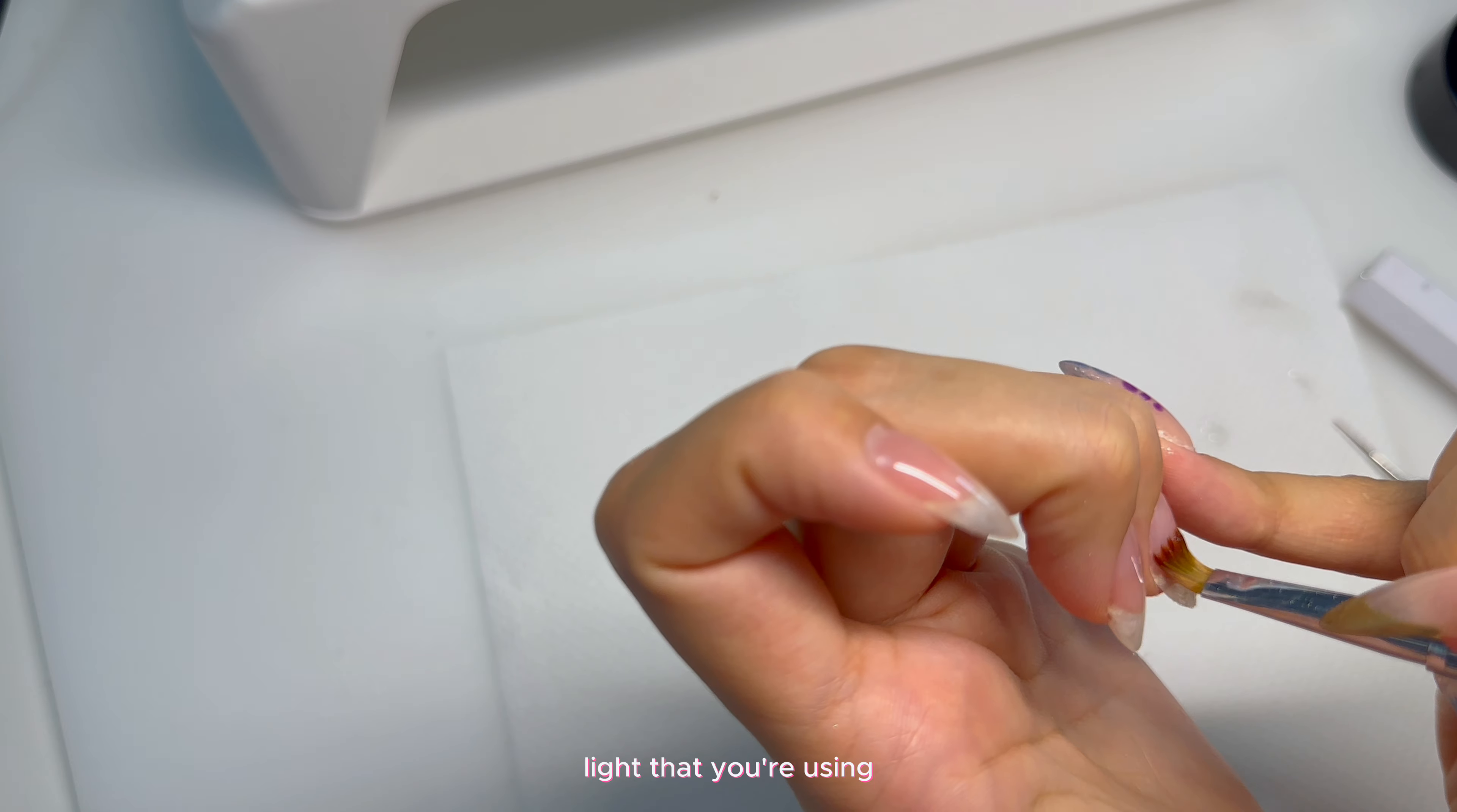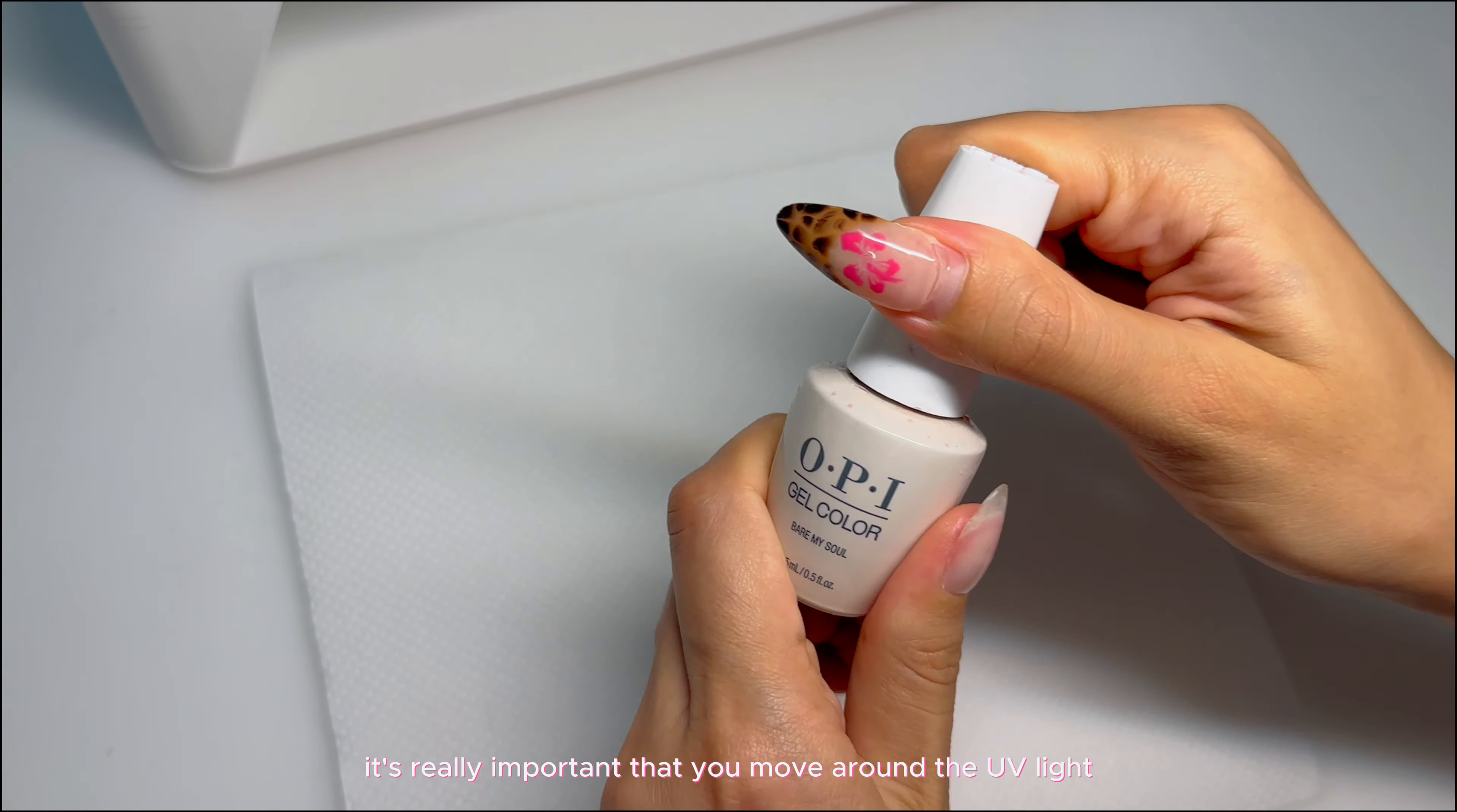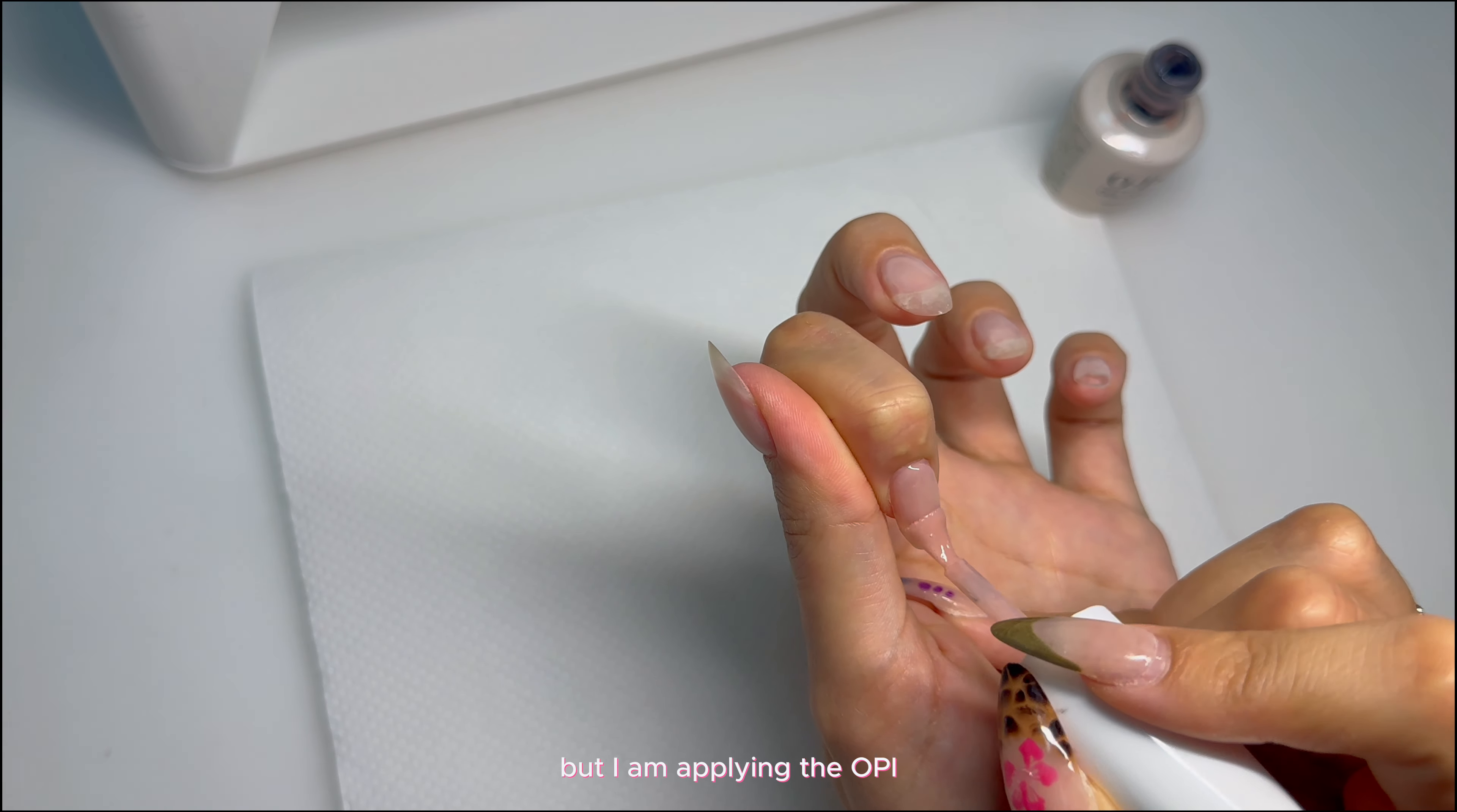One of the ways that I prevent a heat spike from happening on my nails is to constantly move the UV light that you're using. The worst thing you can do is to put your hand fully into the curing light and not move it. So for the first 25 seconds, it's really important that you move around the UV light on and off the nail to prevent any burning from happening.